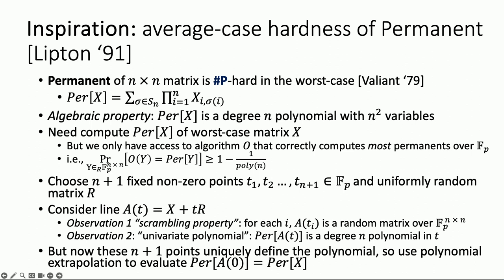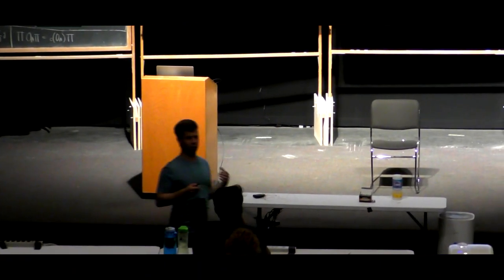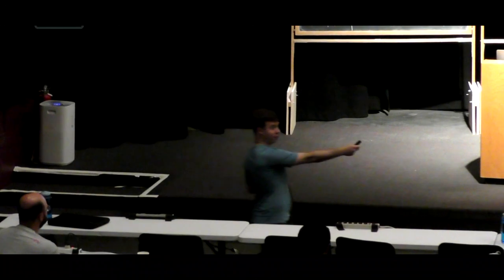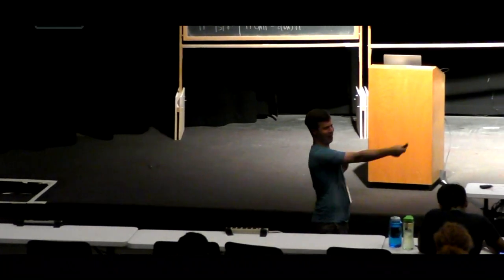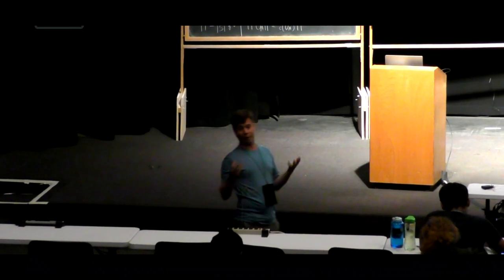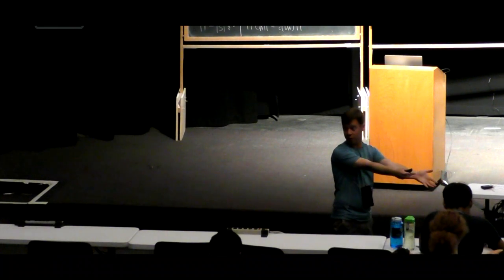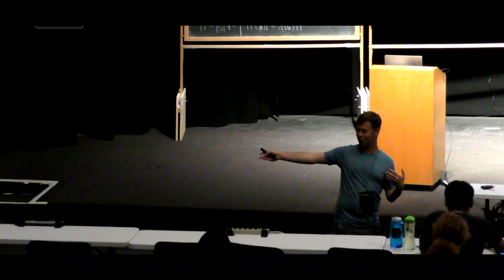So what goes wrong when I try to adapt this argument if, instead of finite fields, I had a matrix X over the real numbers, and considered random matrices over an IID Gaussian ensemble? The scrambling property is broken. If you take a fixed matrix X and shift it by something Gaussian, you have a shifted Gaussian, not the Gaussian ensemble anymore. That's a problem because the average-case algorithm O works only with high probability with respect to the IID Gaussian ensemble, not this weird shifted Gaussian ensemble.